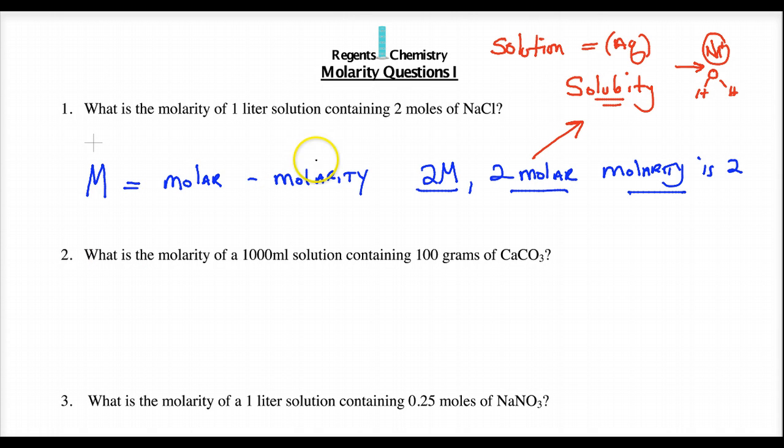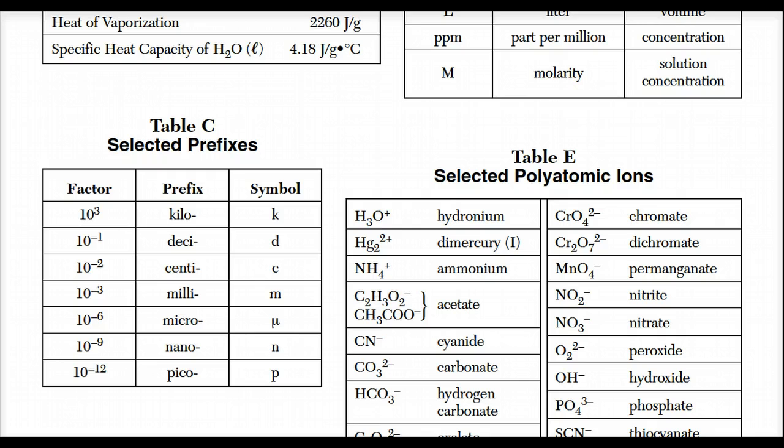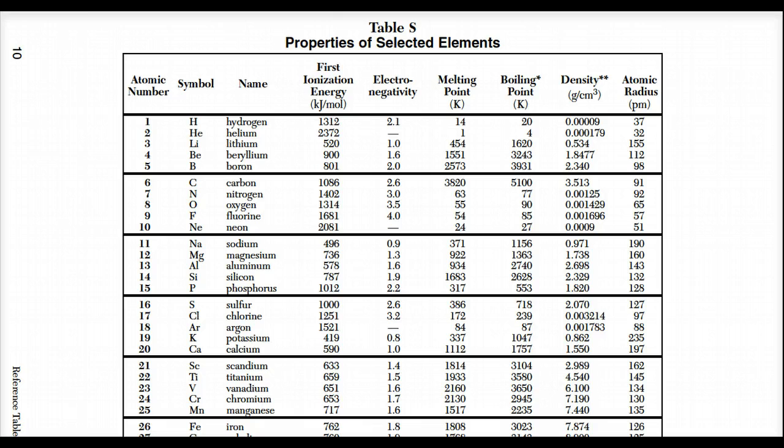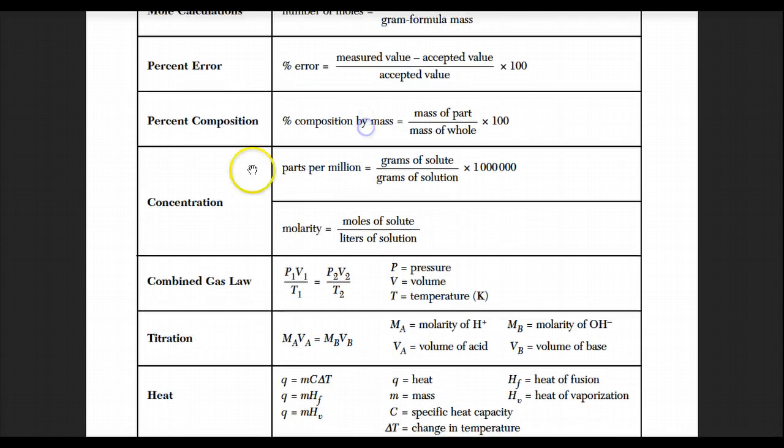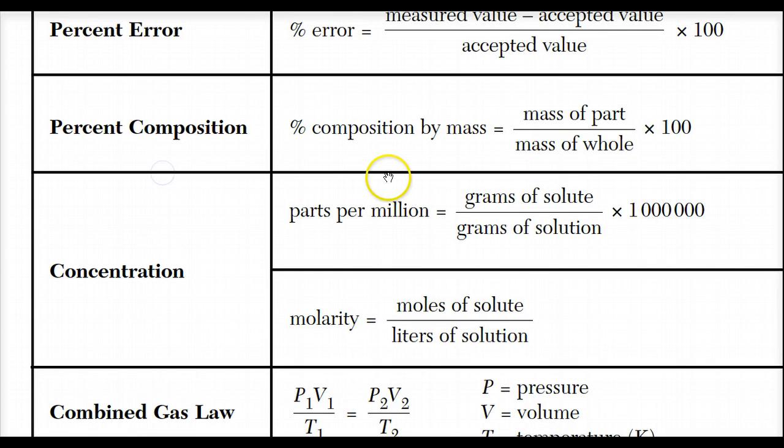Now, when we do these formulas, we have to think about what does molarity represent? In Table T of the reference table, looking at our reference tables, we go down to Table T, which is the last page. We're going to find that we have something called concentration, which represents how much solute particles are dissolved by the solvent. And what we have is molarity is moles of solute over a liter of solution.